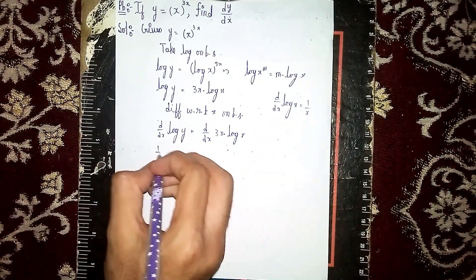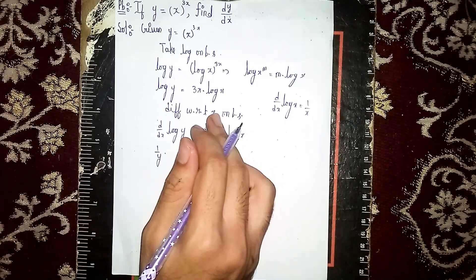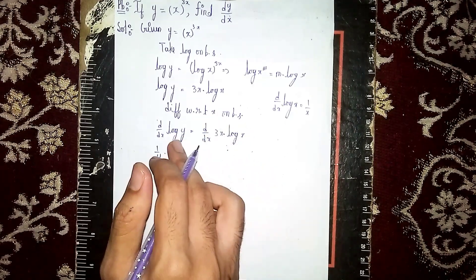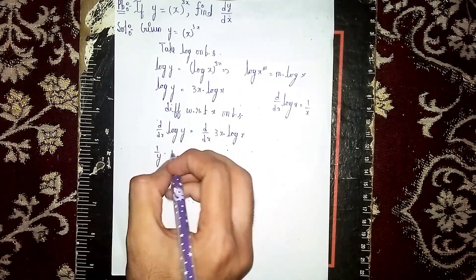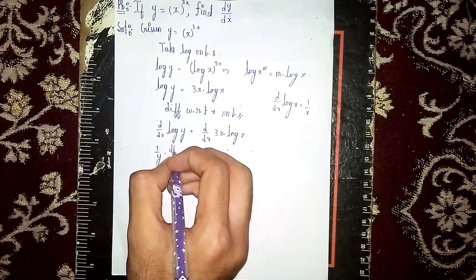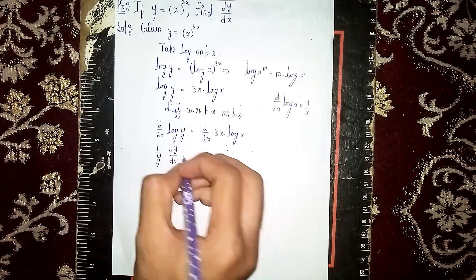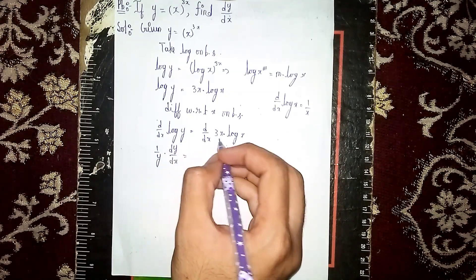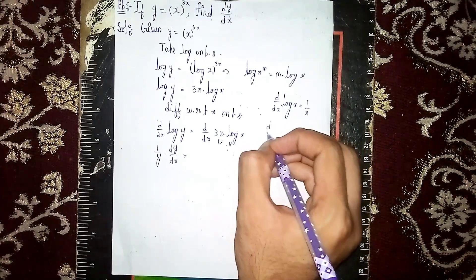So the left side becomes 1/y, and since we are differentiating with respect to x and y is a function of x, it becomes (1/y) dy/dx. On the right side, we use the UV product rule.